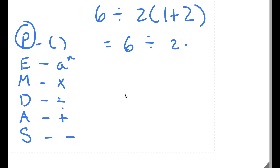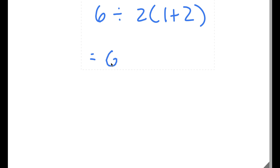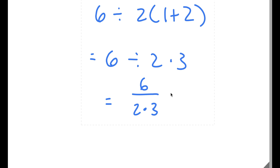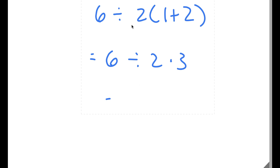Now, what people used to do to get the wrong answer — actually this was during the 1900s — they would use the right method first by adding 1 plus 2 in the parentheses to get 6 divided by 2 times 3. But then instead of doing 6 divided by 2 first, they would compute 2 times 3 equals 6, giving 6 over 6 which equals 1. This is the wrong method, because between multiplication and division, we do whichever comes first going left to right — in this case, division comes first. That's how you solve this problem.